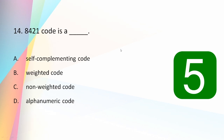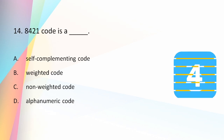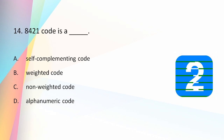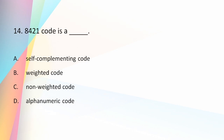8421 code is: a self-complementing code, weighted code, non-weighted code, or alphanumeric code? The answer is a weighted code. 8421 is a weighted code and it does not support self-complementing because it has position weights 8, 4, 2, 1 and the sum is not equal to 9.